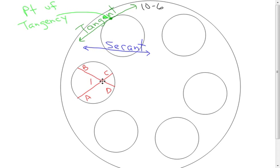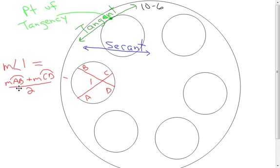Now, if this were at the center, the measure of the intercepted arc would equal the measure of angle one. Or if the vertex of angle one was on the circle, the intercepted arc would be twice the measure of the inscribed angle. But since it's neither of those, we need another way. It's a combination of arc AB and arc CD — you take the average of those two arcs, meaning angle one's intercepted arc plus the vertical angle's intercepted arc, added together and divided by two, gives you the measure of angle one. Think average.